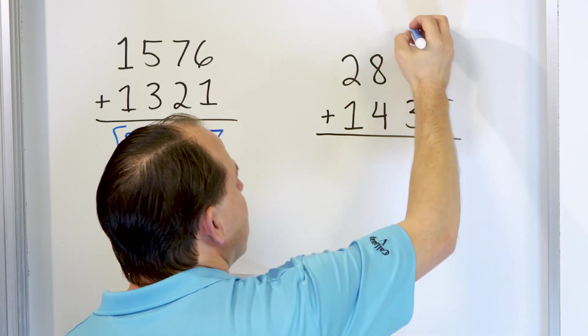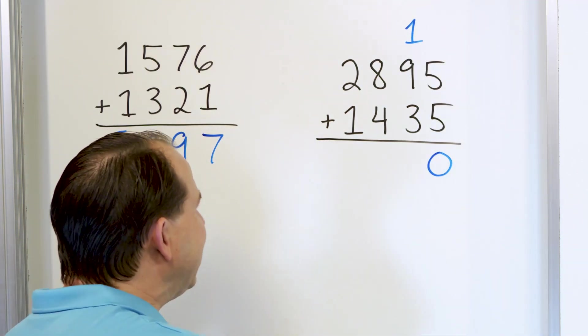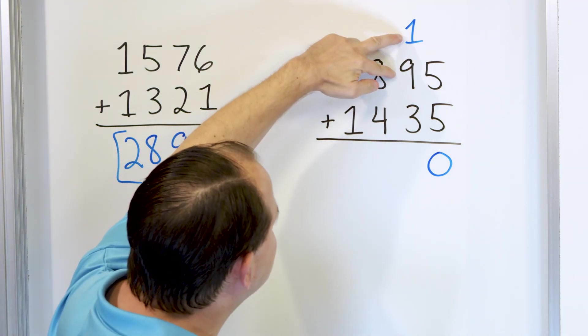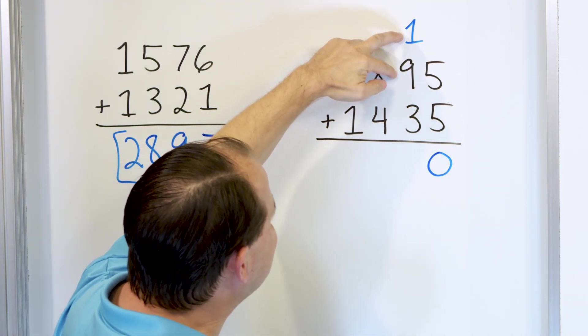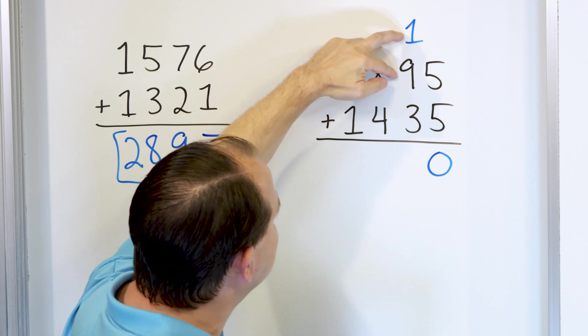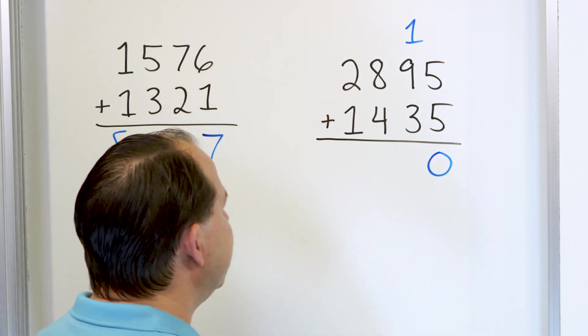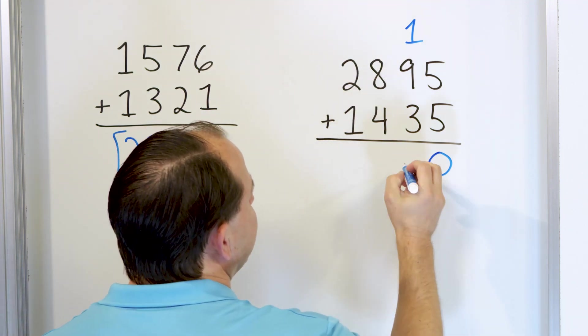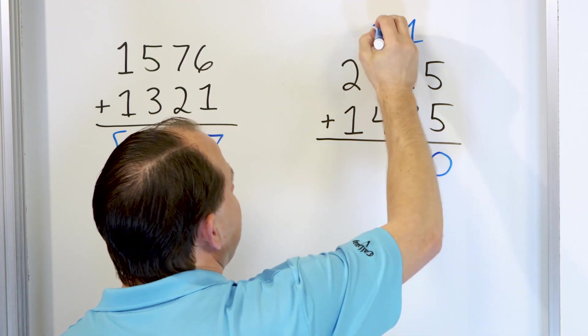So we can't write 10 down here. It's a two-digit number. So we'll put the 0, and we'll carry the 1. Now, the easiest way to add these is to know that 9 plus 1 is 10. Those are complements. Anything that adds together to make 10 is a complement. So this is 10 plus 3 is 13.